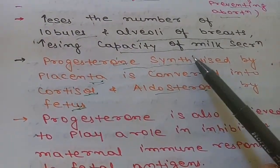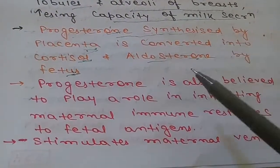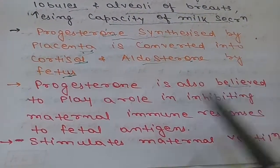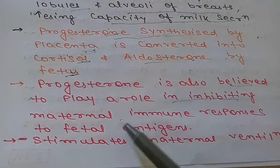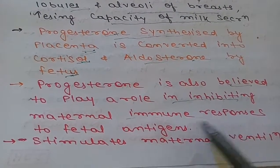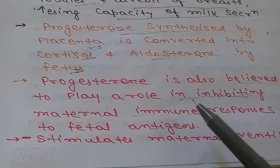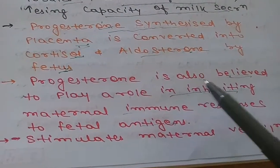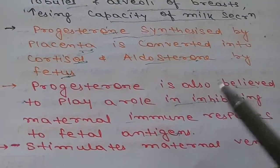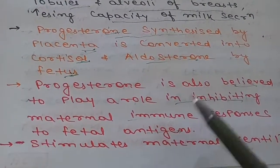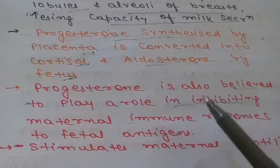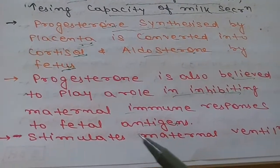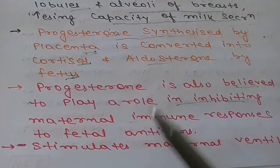The fourth function is that progesterone is also believed to play a role in inhibiting the maternal immune responses to fetal antigens, thus helping in preventing fetal graft rejection. This has been discussed in detail in another video.